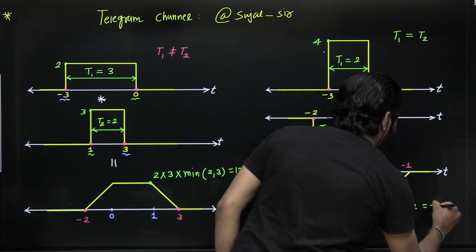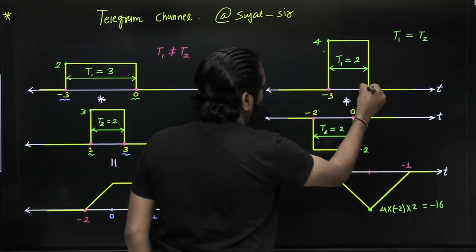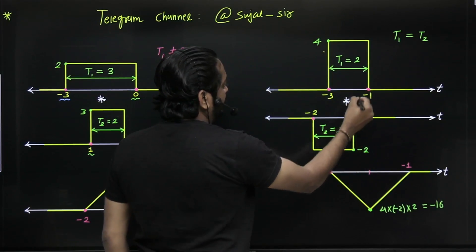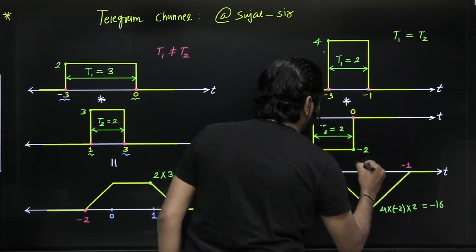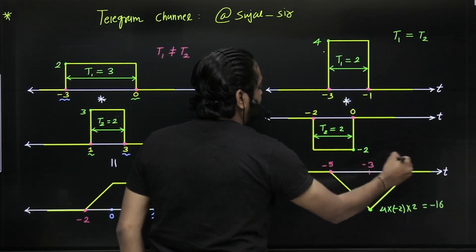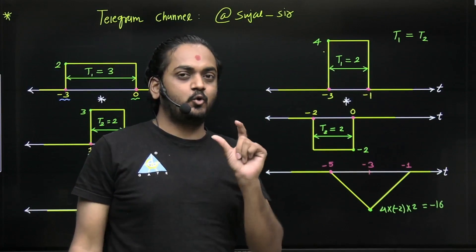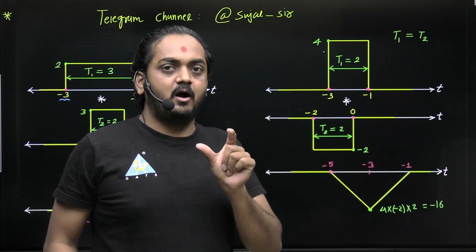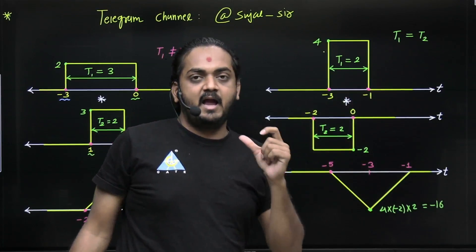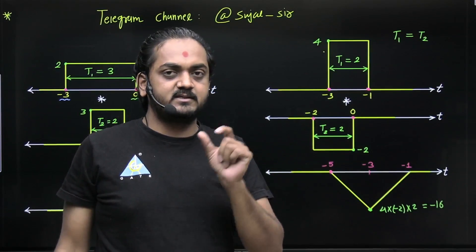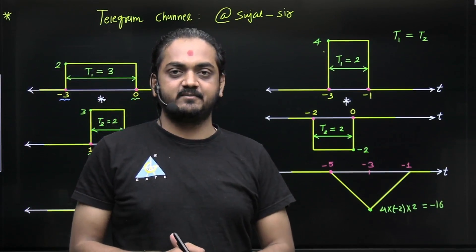The center point of the triangle is the sum of the upper and lower limits: minus 1 plus (minus 2) = minus 3. The overall limits are: lower limit = minus 3 + (minus 2) = minus 5, upper limit = minus 1 + 0 = minus 1, center at minus 3. So in this way you can find convolution between two equal length pulses and two unequal length pulses. Equal length gives a triangle; unequal length gives a trapezoidal. Remember this concept.